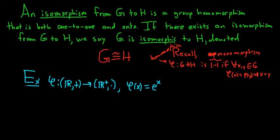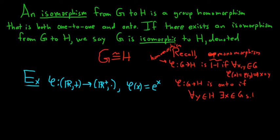Epimorphisms are group homomorphisms that are onto. So φ from G to H is onto if for all y in H, we can find some x in G such that φ(x) = y. If a group homomorphism is onto, it's called an epimorphism. So a monomorphism is a one-to-one group homomorphism, and an epimorphism is an onto group homomorphism.